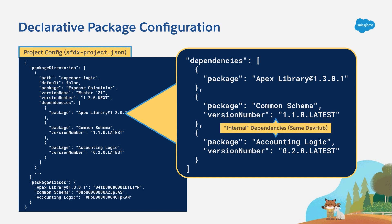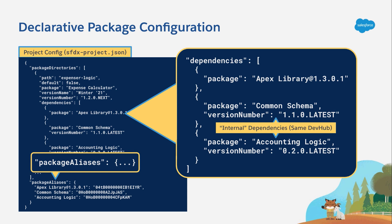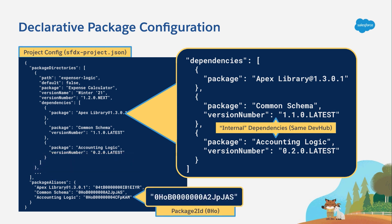Let's start by looking at how a couple of internal dependencies are being declared. The syntax being used is human readable — it combines descriptive names like "common schema" and "accounting logic" with version numbers instead of cryptic package IDs. That's made possible by entries in the package aliases section. Here you can see that "common schema" and "accounting logic" are both aliases to a package 2 ID, or 0H0 for short. A 0H0 ID represents the concept of a specific package owned by your developer hub. That means when declaring dependencies, you can make use of the keyword "latest", which lets the 2GP build system know you want the latest build of a particular major.minor.patch version number.